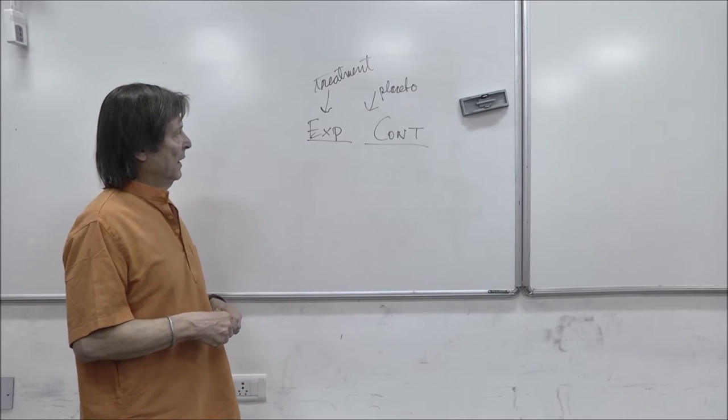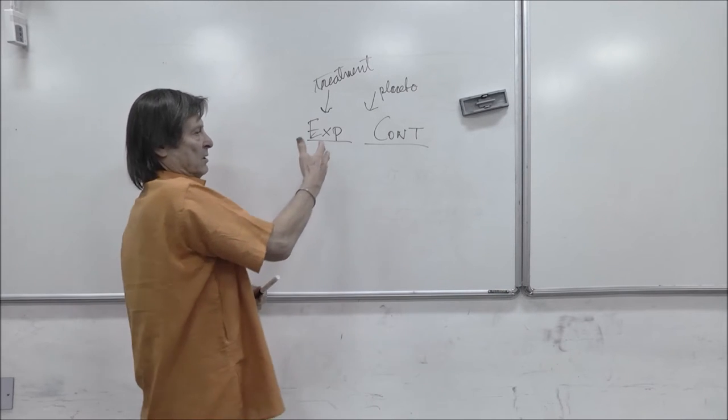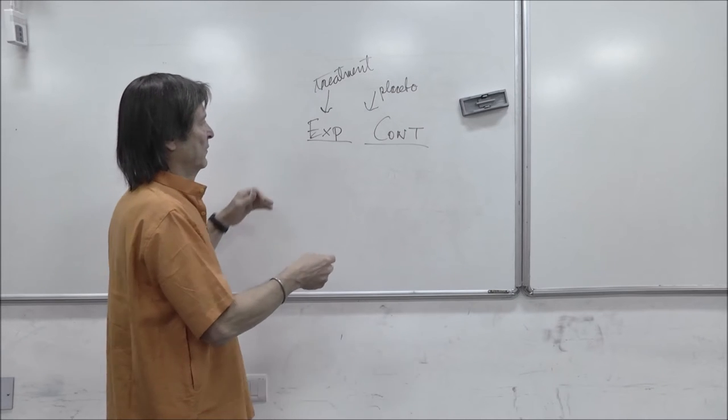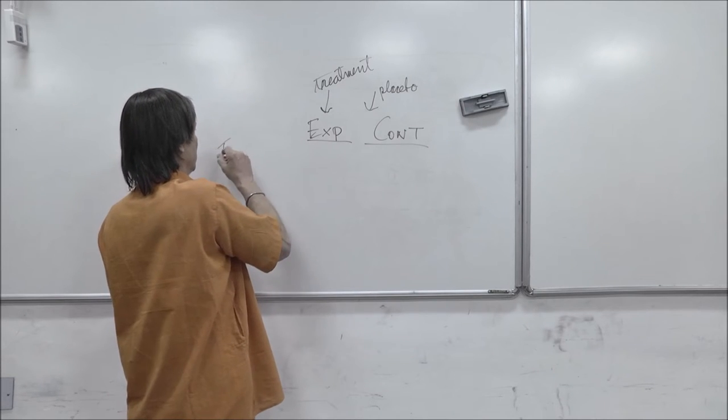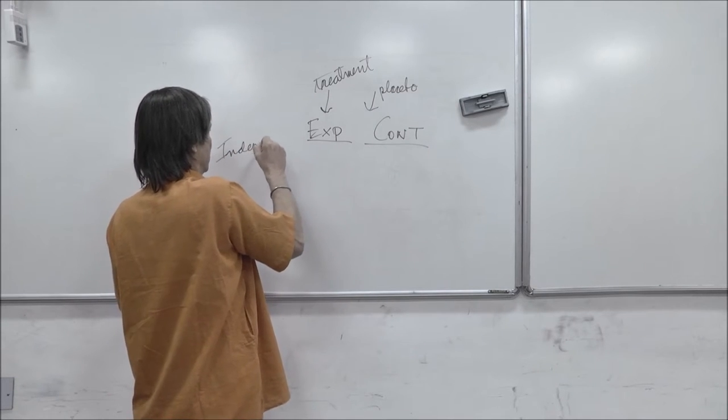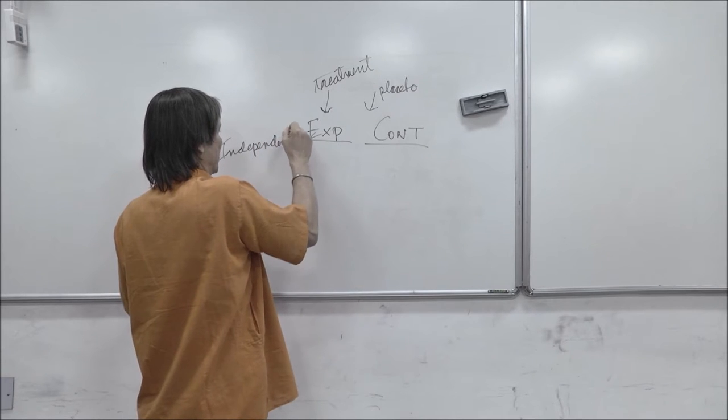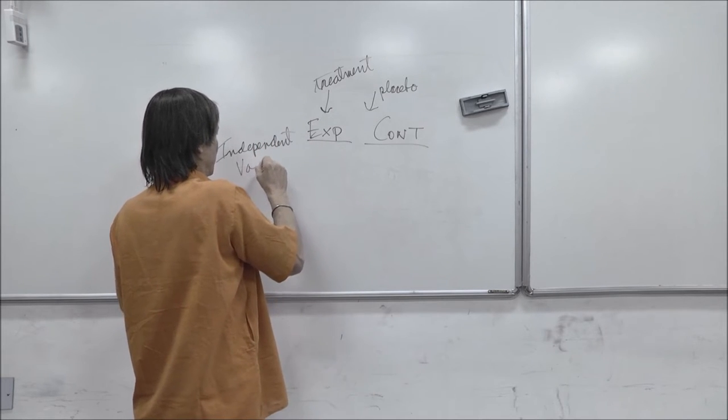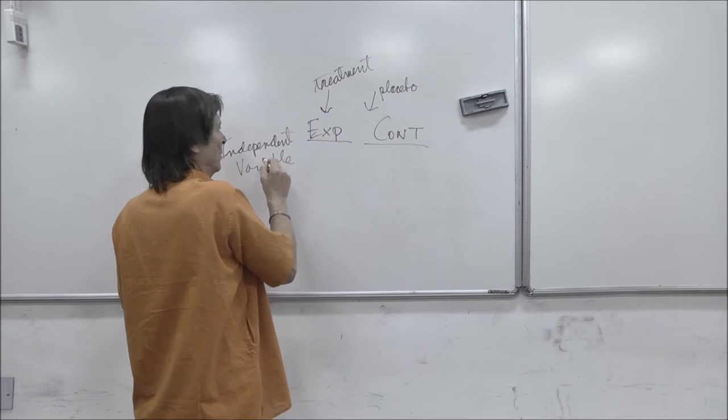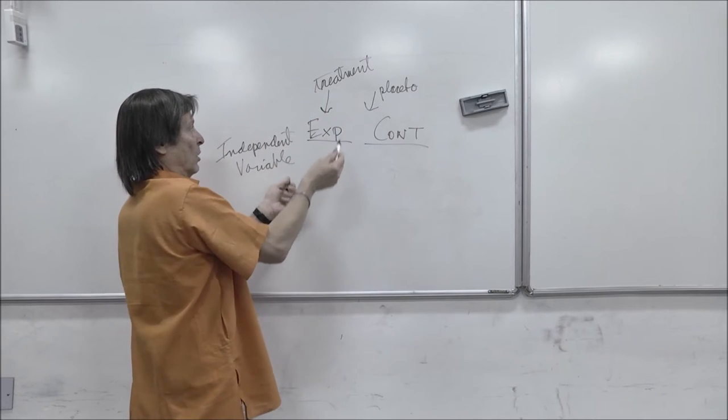So this two-group design, this part in terms of variables, is called our independent variable, and as you'll see in chapter one, the independent variable is the thing we're manipulating, and we're manipulating a treatment to see if it works or not.